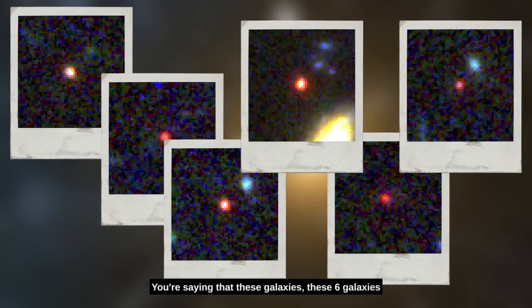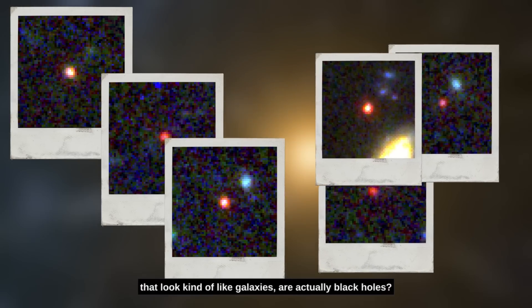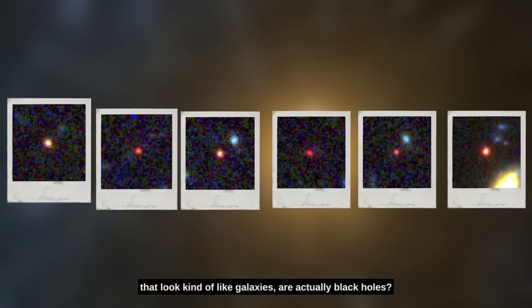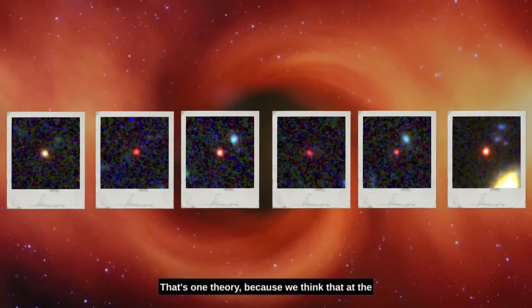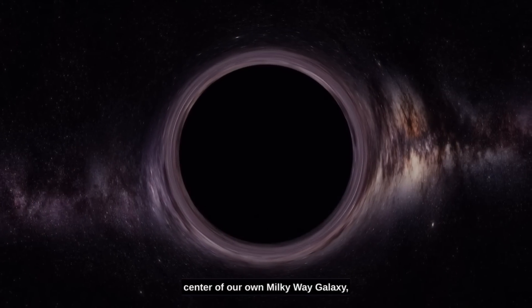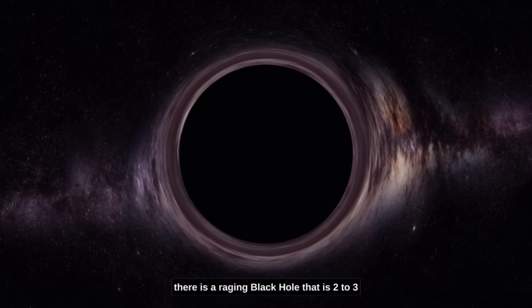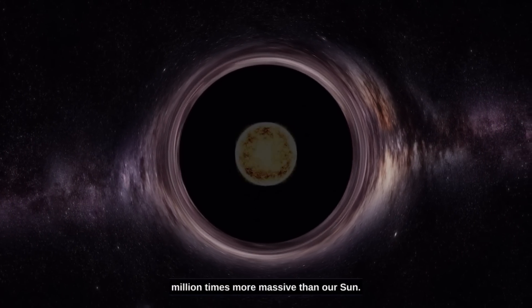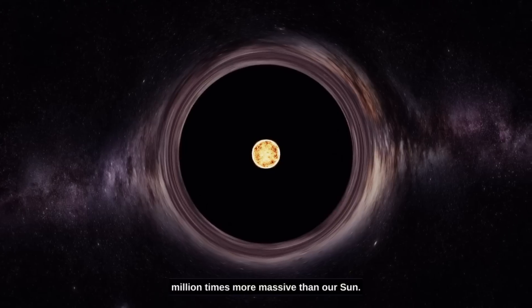You're saying that these galaxies, these six galaxies that look kind of like galaxies are actually black holes? That's one theory because we think that at the center of our own Milky Way galaxy, there is a raging black hole that is two to three million times more massive than our sun.